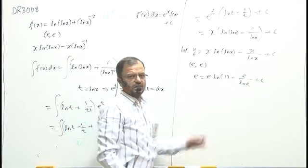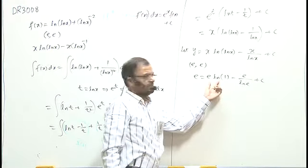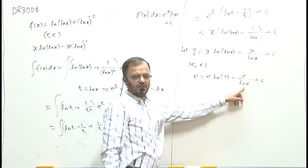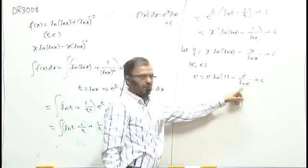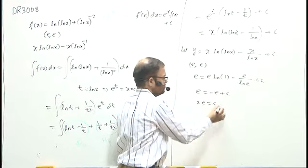Now, it is very clear that this value will become 0. This vanishes. This value, denominator ln e, will become 1. Therefore, e is equal to minus e plus c. 2e is equal to c.